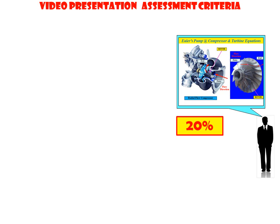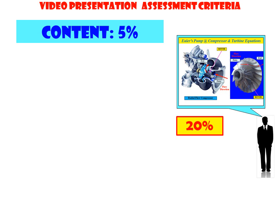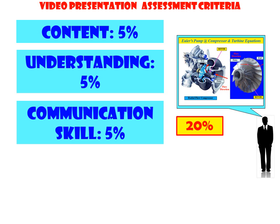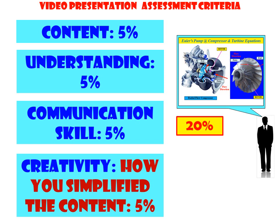For the video presentation assessment criteria, in total you will get 20% of your total carry mark for the subject. The breakdown is: 5% for the content of your video presentation, 5% for your understanding of the paper, 5% for your communication skill, and 5% for your creativity — referring to how you simplify the content of the paper. In total, you will get 20%.